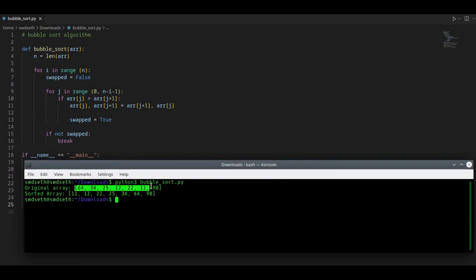So the array was 64 and 90 was not sorted, and after the bubble sort algorithm, you can see it is 11, 12, 22, up to 90 in the ascending order, so that means it has sorted the array correctly.